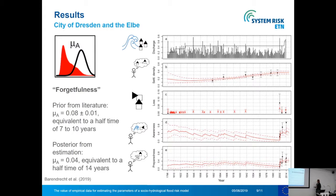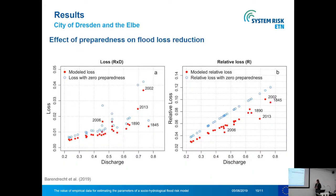Regarding the forgetfulness parameter: we had prior information — the black line — which told us the half-time was equivalent to 7 to 10 years. But if we apply our model, we see that in Dresden the half-time is equivalent to 14 years, so people actually remember longer than we had thought before.